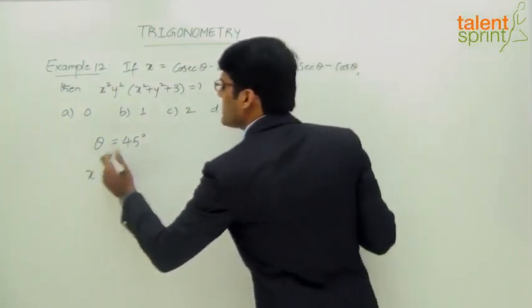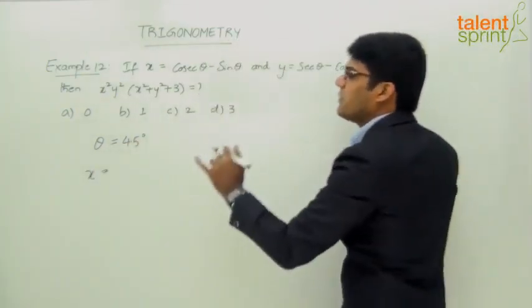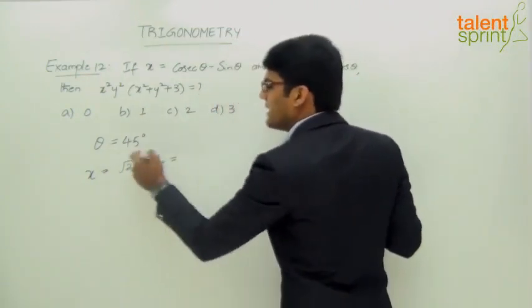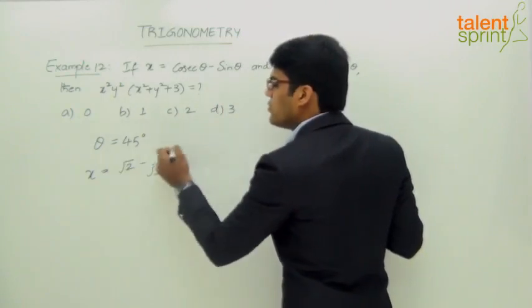What will be x in this case? Cosecant 45° minus sine 45°. Cosecant 45° is √2, sine 45° is 1/√2, so x = √2 - 1/√2 = 1/√2.